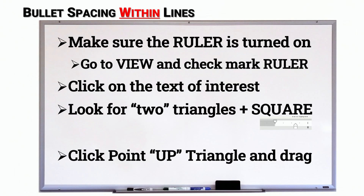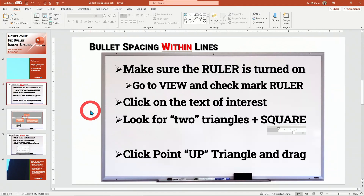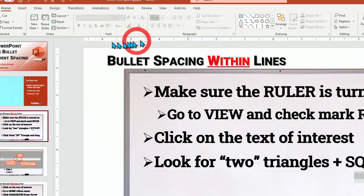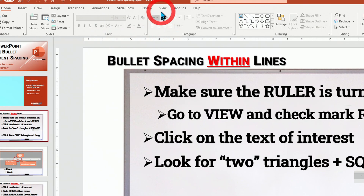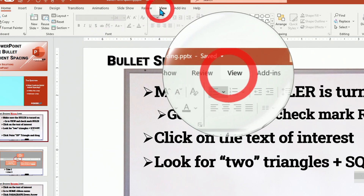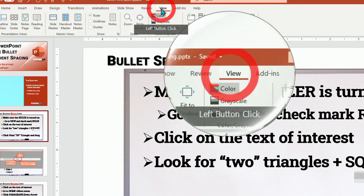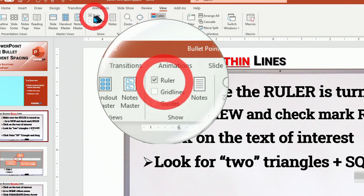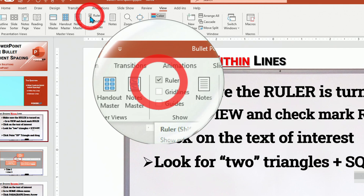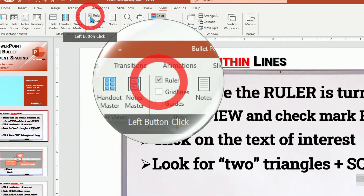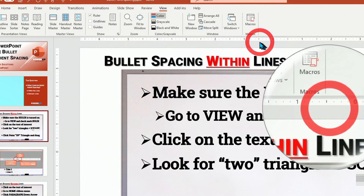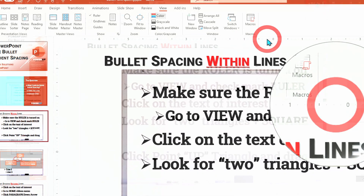What we're going to do is make sure we can turn the ruler on. This is our ruler line — it may not be showing on your system. If so, you're going to want to go up to View, click on View, and then look over here and you'll find the ruler can be clicked on and off. Make sure the check mark is there and you'll then see these lines.